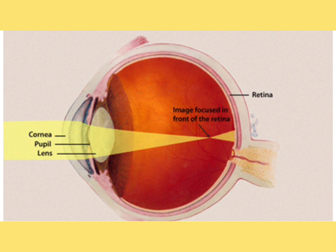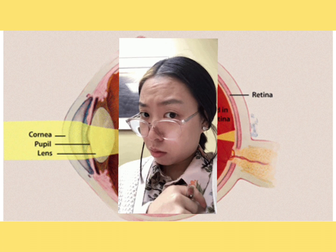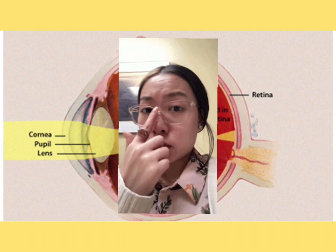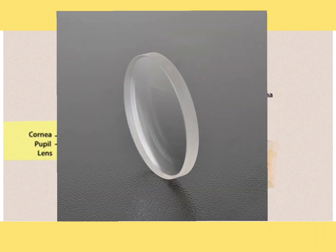Whenever you are correcting a myopic patient, you need to give concave lenses. This concave lens is thinner in the center and thick in the periphery, which creates some trouble for the patient in adapting properly. I'm going to discuss how to deal with these conditions.